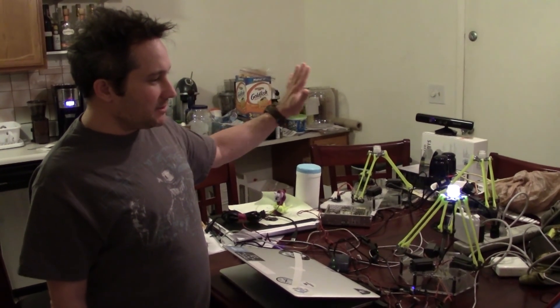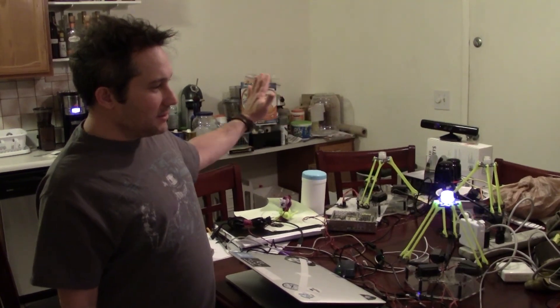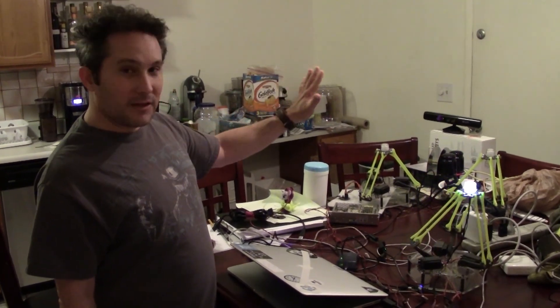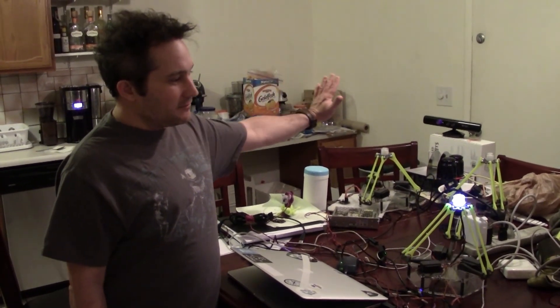So now it's tracking my hand. It can see my hand. So I move my hand left and right, you can see it's moving left and right. If I move my hand forward and back, that's up and down for the Delta.